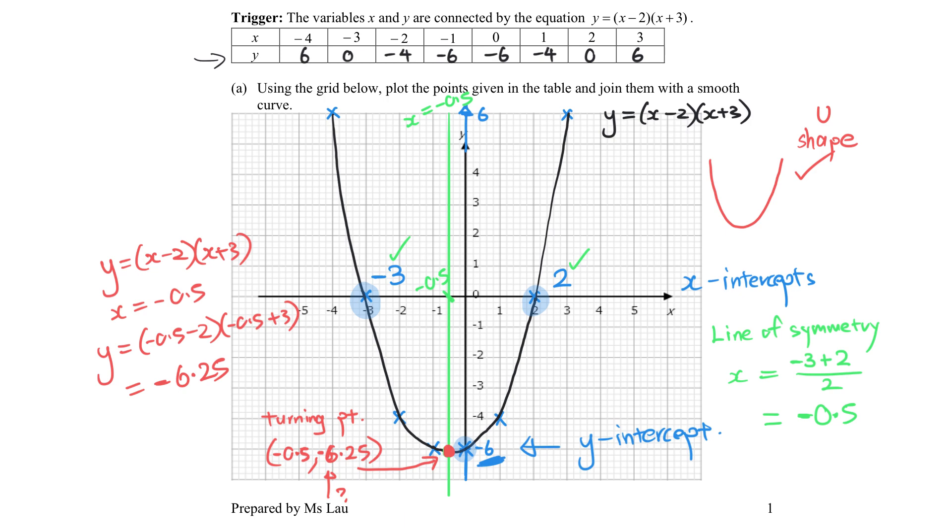So, all these are the important points of a sketch. The x-intercept values, the y-intercept value, the shape of the curve, and the value of the turning point together with the line of symmetry. So, let's go into an actual sketch where we are finding only these crucial points and then proceed to do the sketch. Let's take a look.